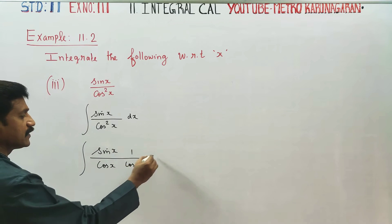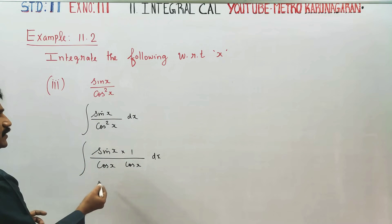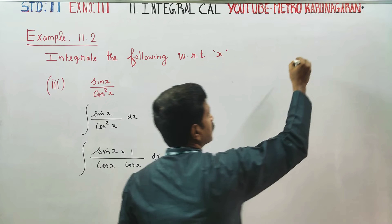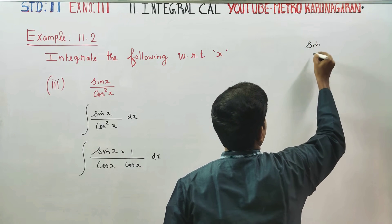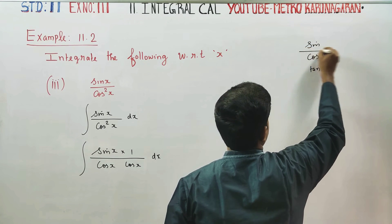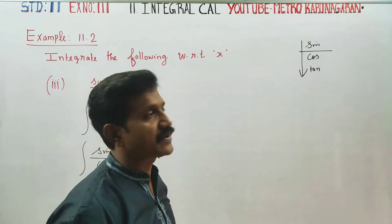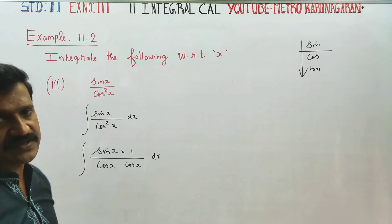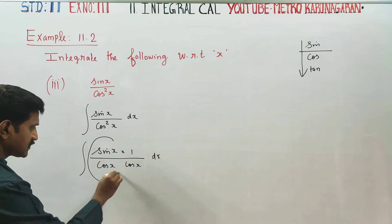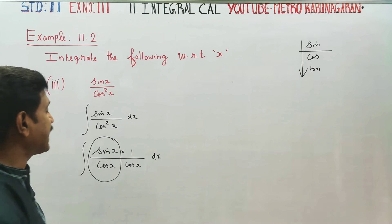I will integrate this with respect to x dx. Now, sin x divided by cos square x — we can split this as sin by cos, multiplied by 1 by cos. Recall that sin theta by cos theta is tan theta, so sin by cos equals tan.